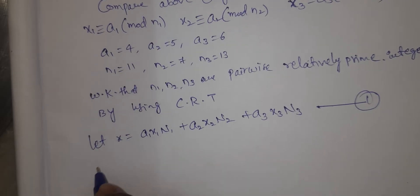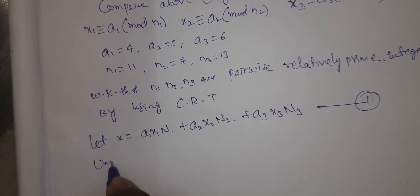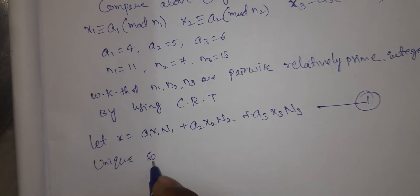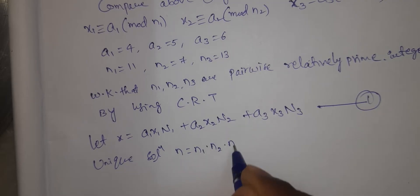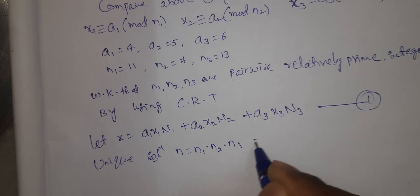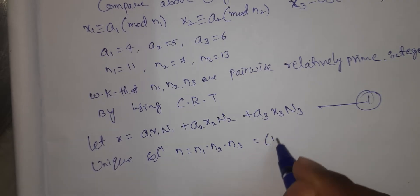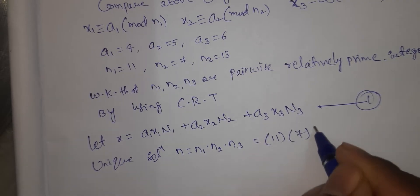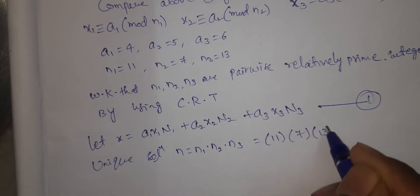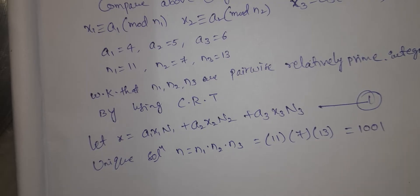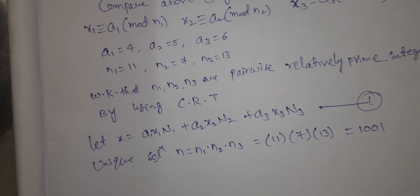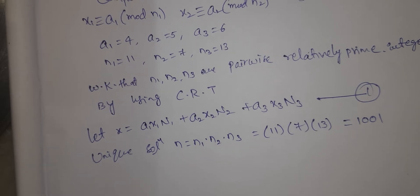For the unique solution, N = n1·n2·n3 = 11 × 7 × 13 = 1001.